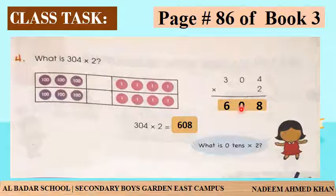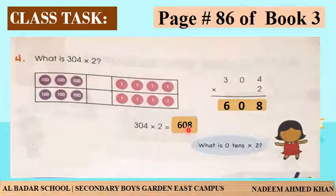تو یہ کیا ہوگیا: 608۔ 304 multiplied by 2 is equal to 608 - یہ ہمارا answer ہے۔